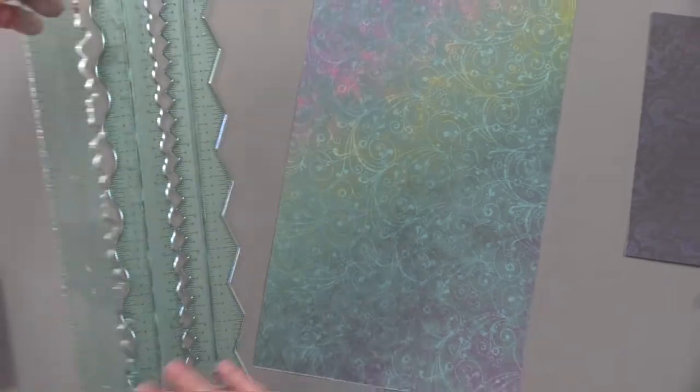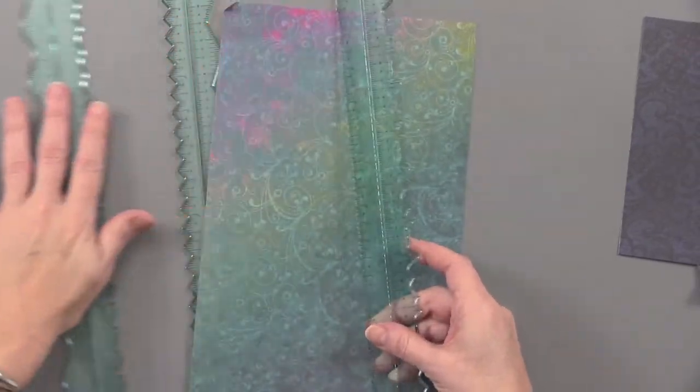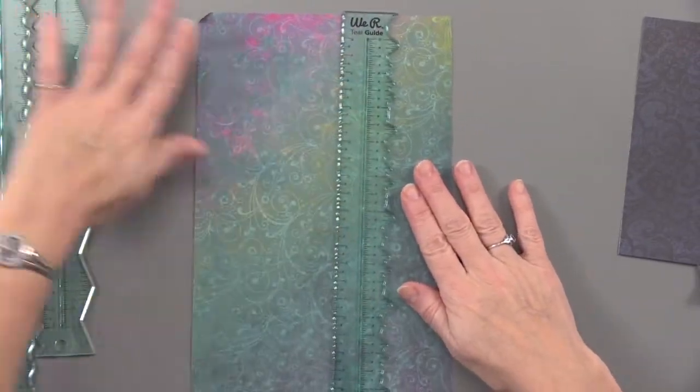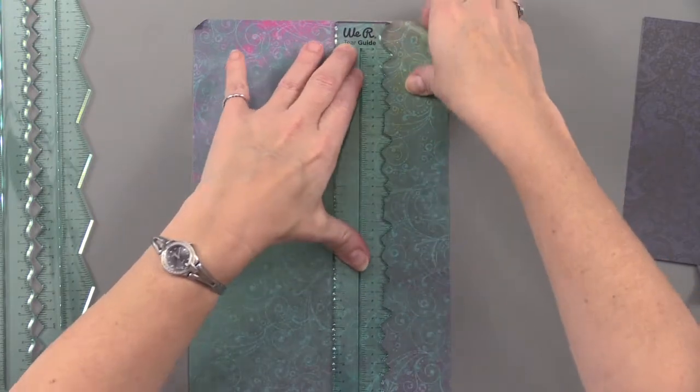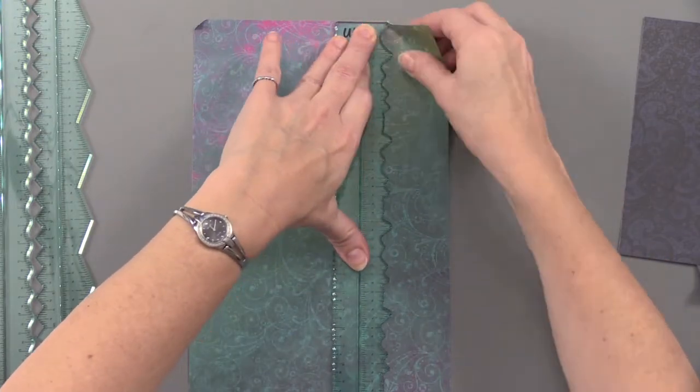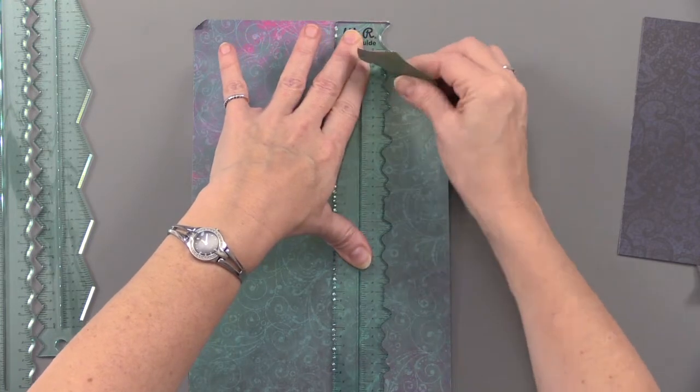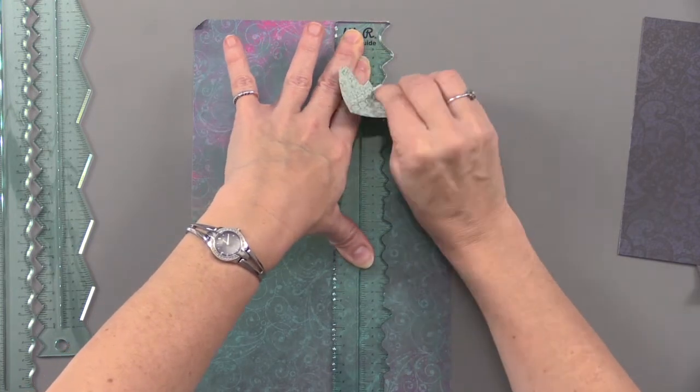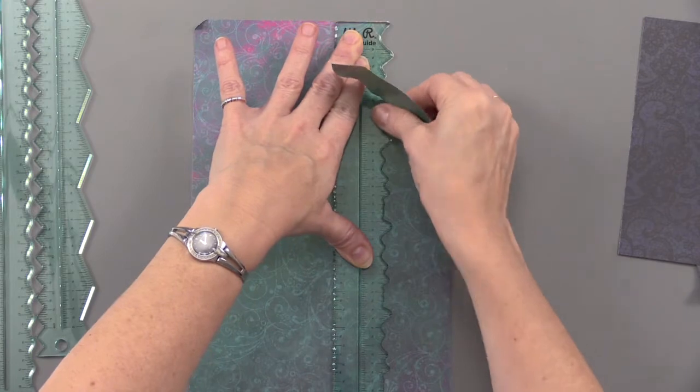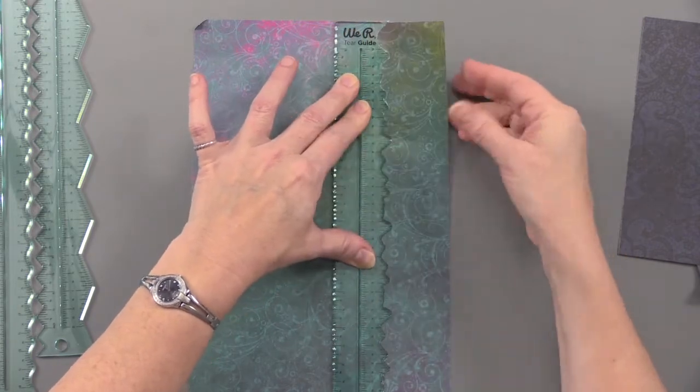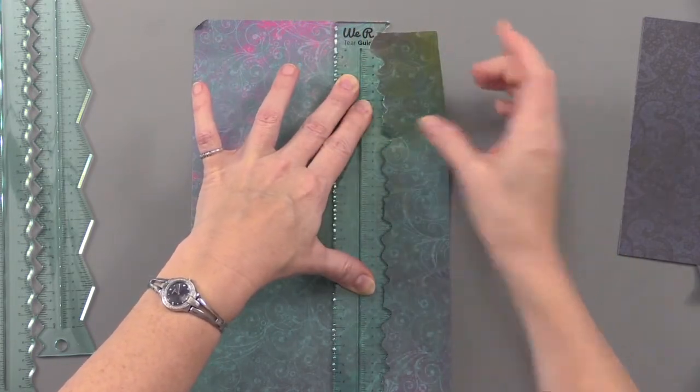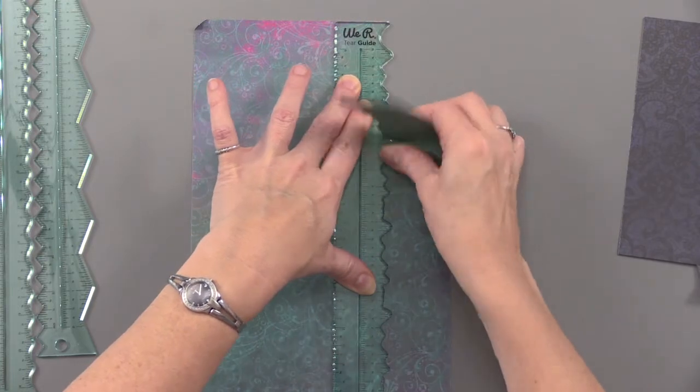Let's look at another edge - how about that coarse deckle edge. It looks torn but in different areas and different ways. I just start moving it along a little bit at a time, just keep moving it. If I keep my fingers kind of close to that ruler, it's not going to tear off in the wrong direction.